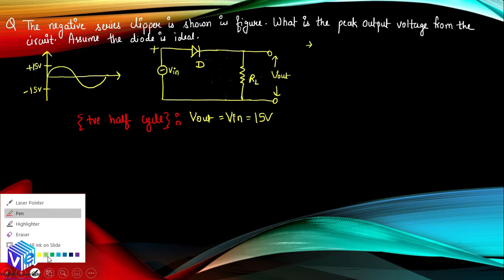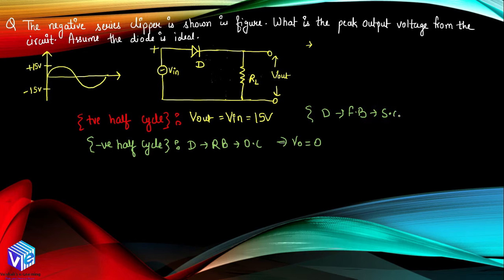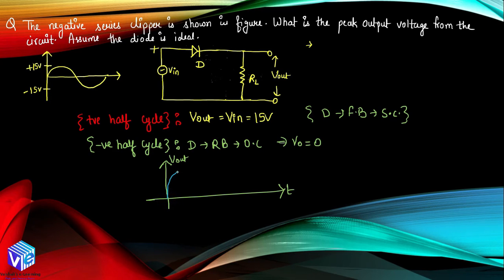During the negative half cycle, the diode becomes reverse biased and behaves like an open circuit. There is no current in the load resistance and V_output equals zero. So the output waveform is present only from 0 to π — only for the positive half of the period when the input is positive do we get a V_output.